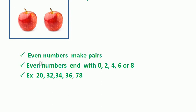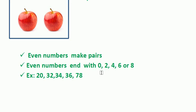Even numbers make pairs. Even numbers end with 0, 2, 4, 6, or 8. The two points you should keep in mind are: even numbers make pairs, and even numbers end with 0, 2, 4, 6, or 8.